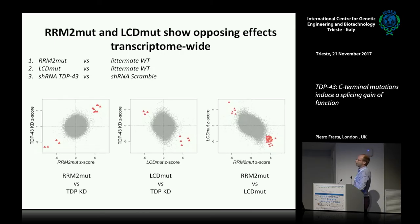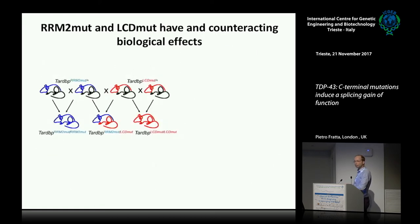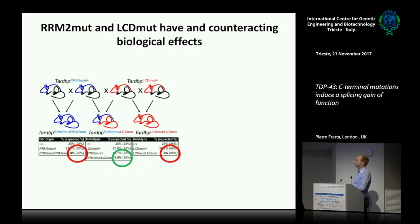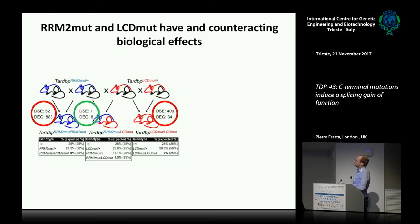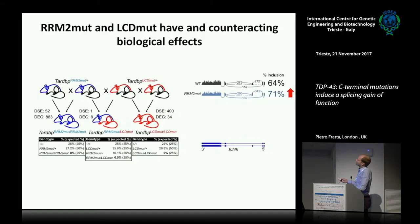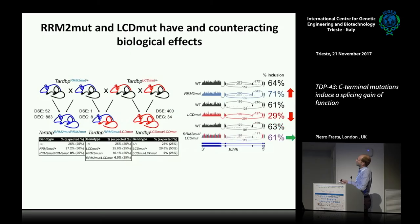To test whether these changes biologically counteract, we crossed the mice. Homozygotes of either mutation alone are lethal, but compound heterozygotes — with no endogenous TDP-43, just the two mutants — start surviving, not at Mendelian rates, but it was really striking. When you look at the RNA in these mice, while both homozygotes had hundreds of splicing and expression changes, in the compound heterozygotes the changes are reduced to a very small number. One example exon goes up in the RRM2 mutant, in the opposite direction in the LCD mutant, and stays stable in the compound heterozygotes — confirming the two mutations counteract at the biological level.